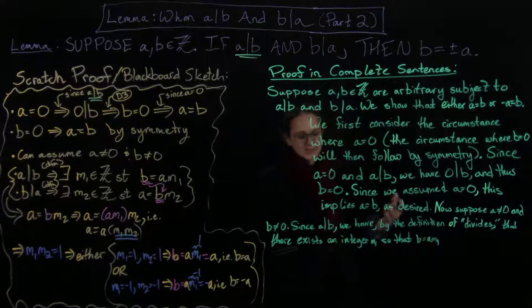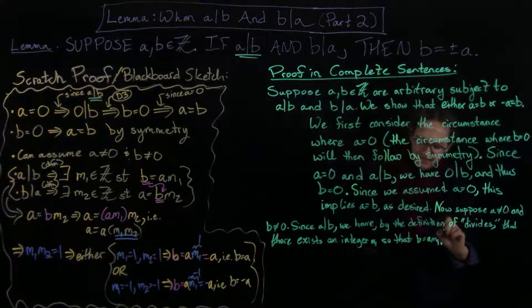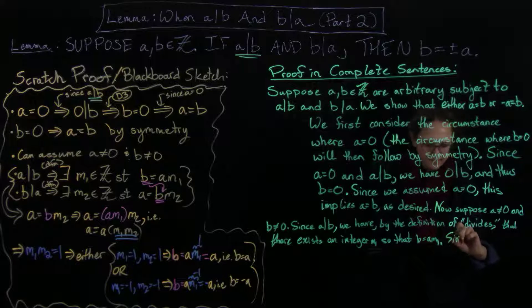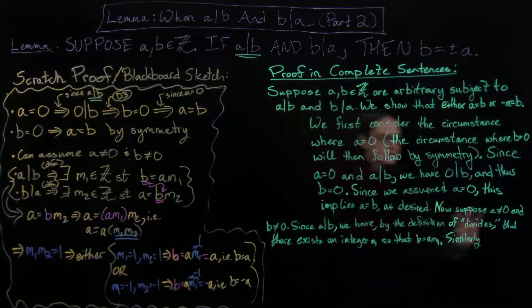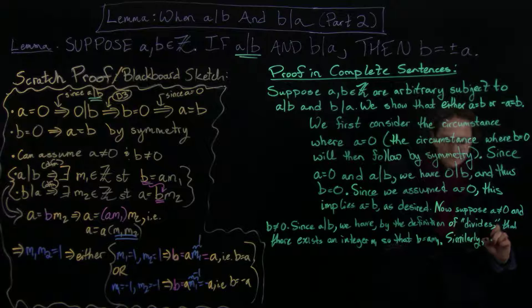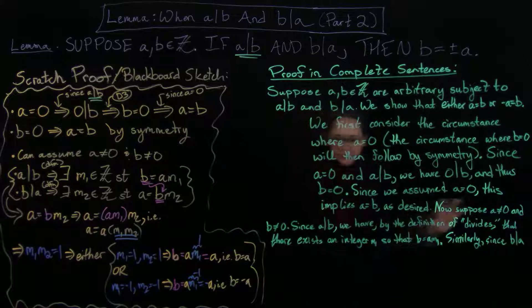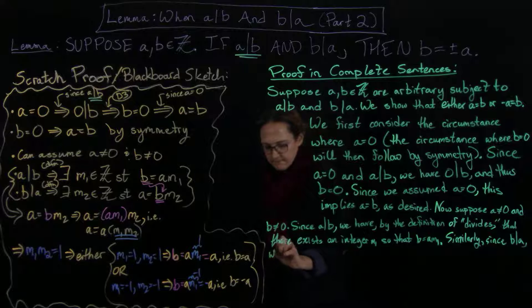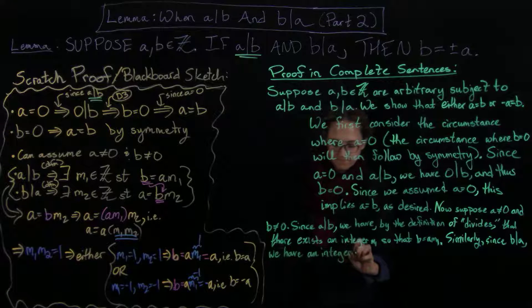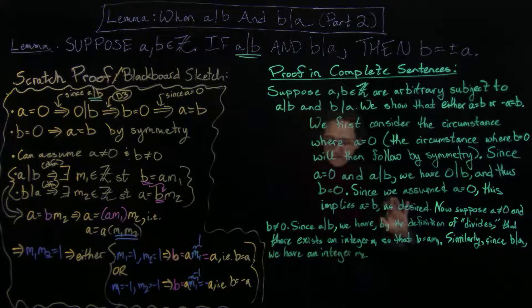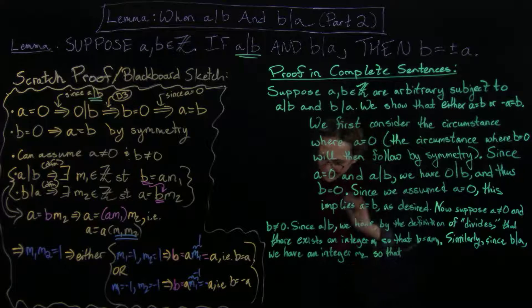And then I can just say similarly, because I'm using the same argument or justification here. So similarly, since b divides a, I have an integer m2 so that a equals b m2.